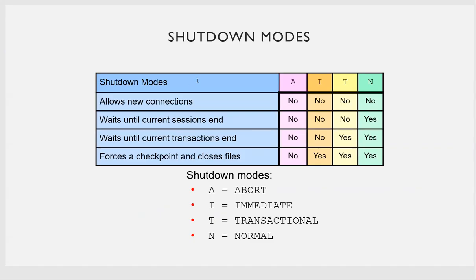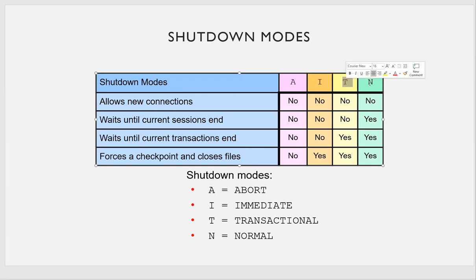Now let's talk about shutdown. There are several shutdown modes: shutdown abort (A), shutdown immediate (I), shutdown transactional (T), and shutdown normal (N). For shutdown normal: it forces a checkpoint to close files, waits for current transactions to end, waits for current sessions to end, and does not allow new connections.